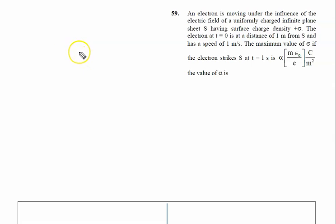An electron is moving under the influence of the electric field of a uniformly charged infinite plane sheet having surface charge density sigma. This is the infinite plane sheet.